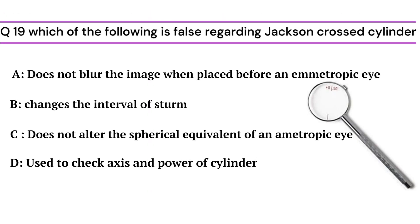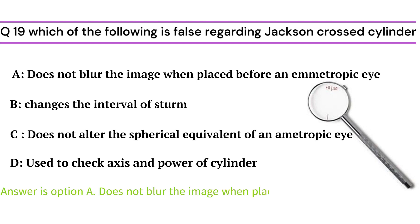Question 19 is regarding Jackson Cross Cylinder. Identify the wrong statement: Option 1 - it does not blur the image when placed before an ametropic eye, Option 2 - changes the interval of Sturm, Option 3 - does not alter the spherical equivalent of an ametropic eye, Option 4 - it is used to check axis and power of the cylinder. The wrong statement is Option A: it does not blur the image when placed before an ametropic eye.